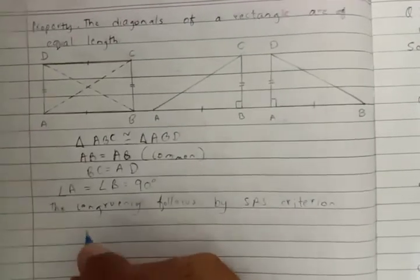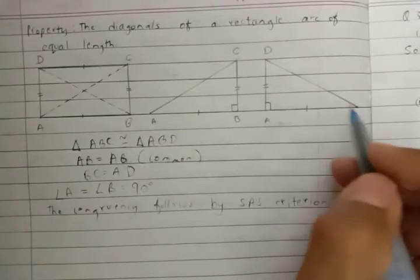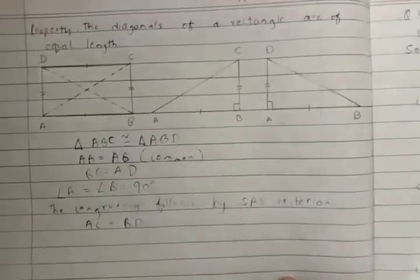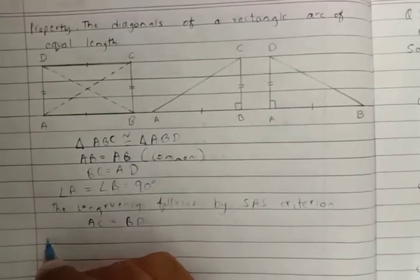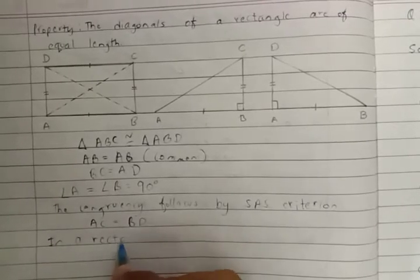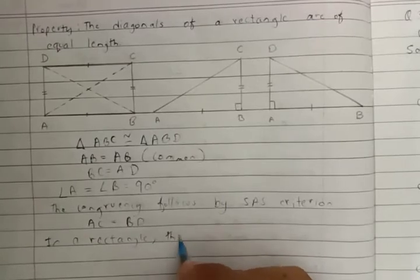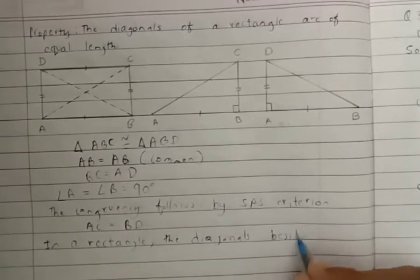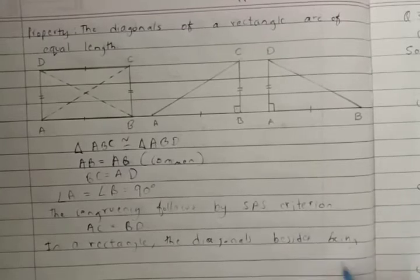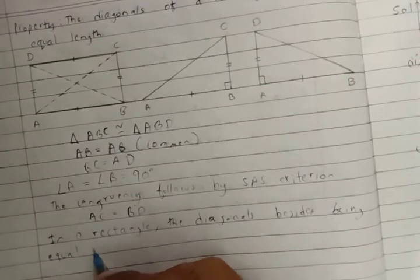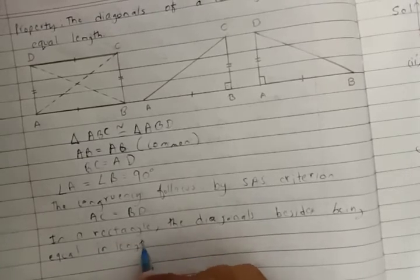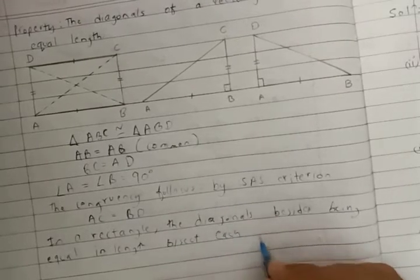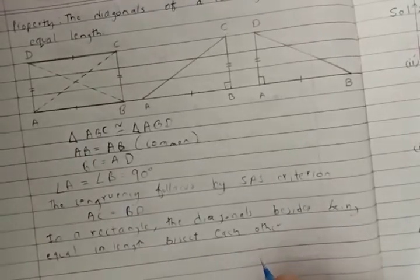So now we can say that length AC equals length BD. We can write that in a rectangle the diagonals are of equal length, with AC equal to BD.